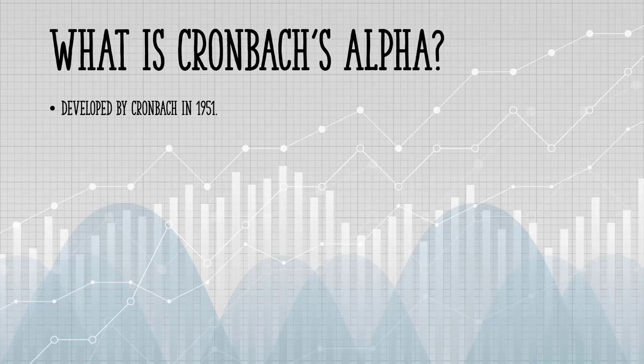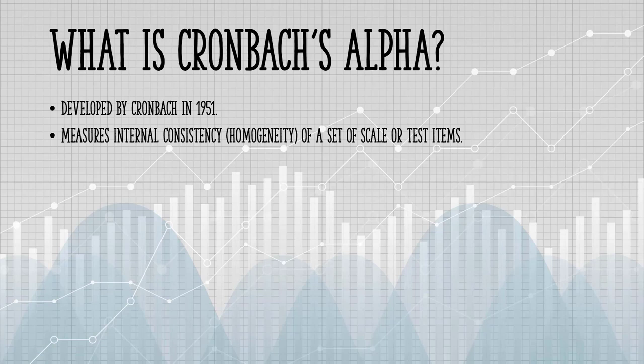Cronbach's Alpha was developed by Lee Cronbach in 1951. It measures internal consistency, that is, homogeneity, of a set of scale or test items. In other words, we want to know to what extent do all of our test items measure the same construct.